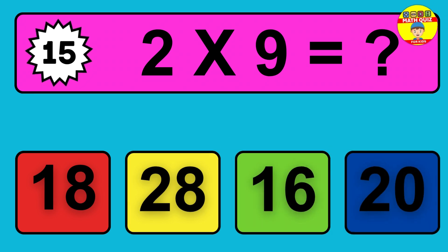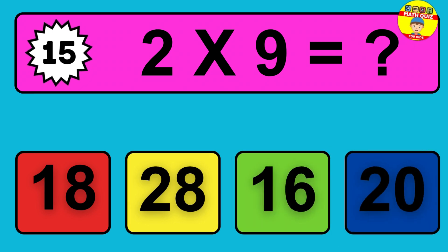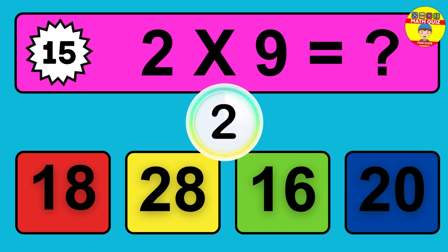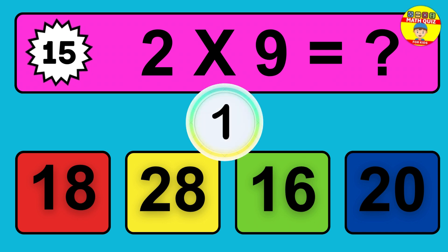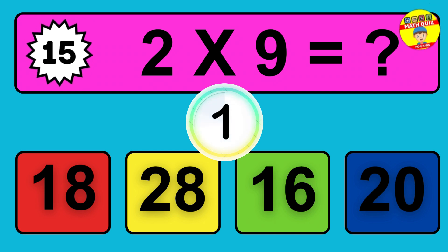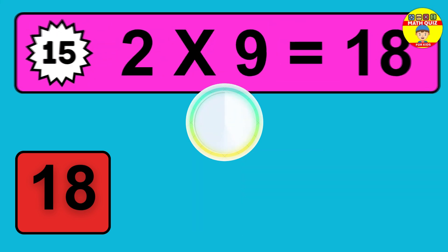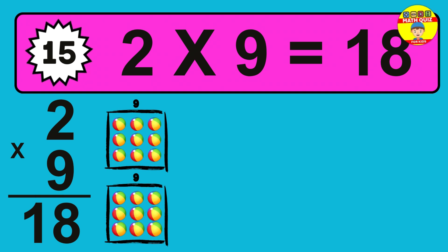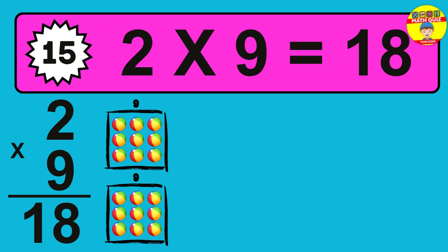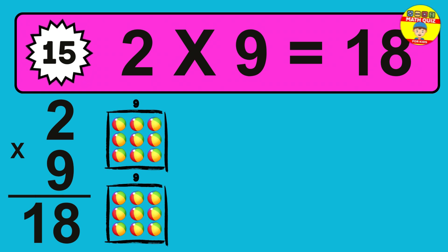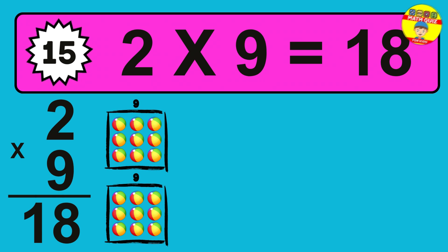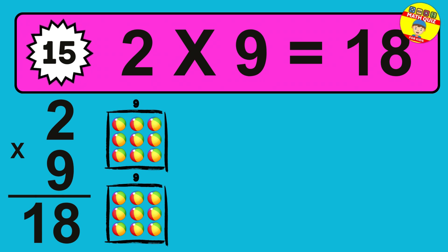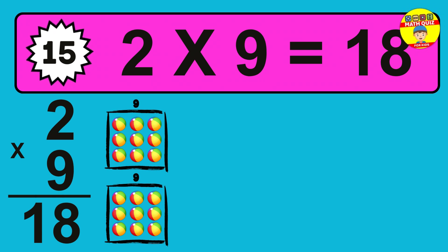Question 15. Two times nine equals what? So the answer is two times nine is eighteen. To calculate, we have two groups with nine balls each one. So how many balls do we have? Eighteen balls.